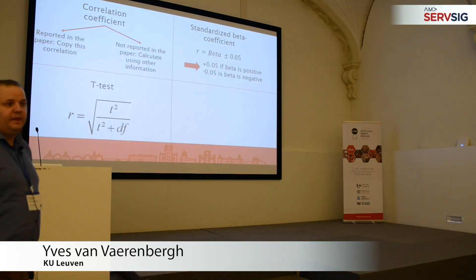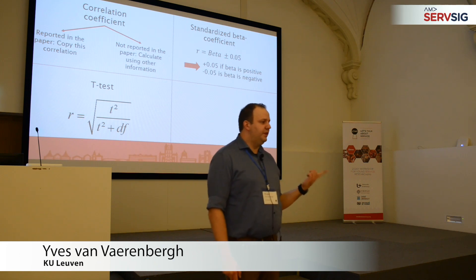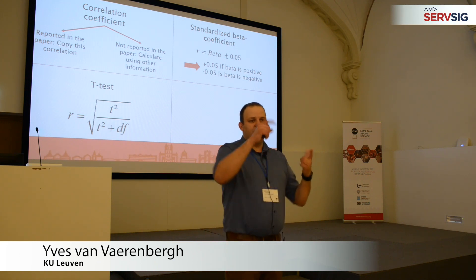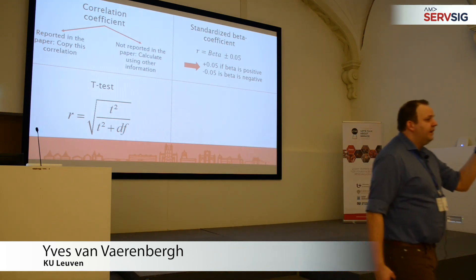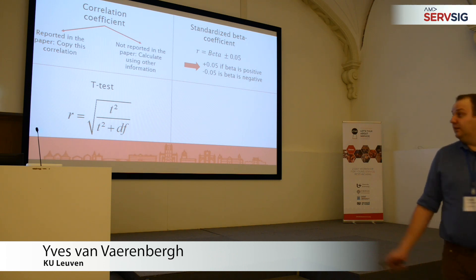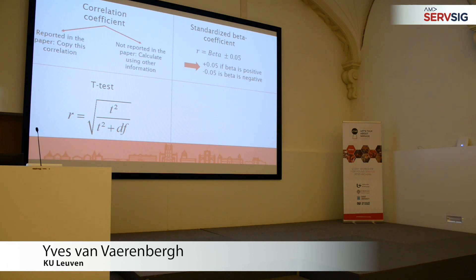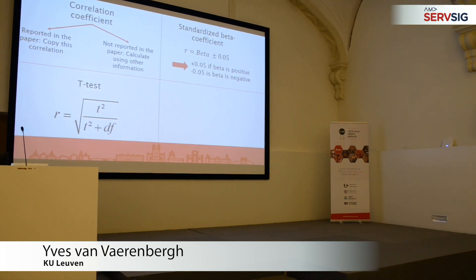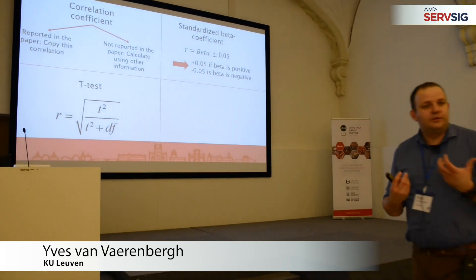In the case of a t-test, if the researchers do their job, they report the t-value and the degrees of freedom. If you take the t-value, square it, place it in the numerator, add the degrees of freedom in the denominator, and take the square root — if you do that, you arrive at the correlation coefficient. And it's an exact conversion of the correlation coefficient.